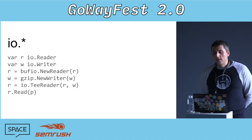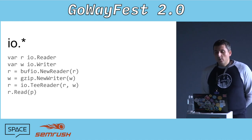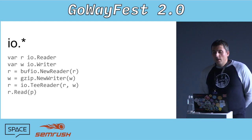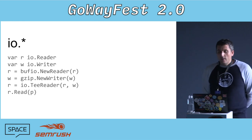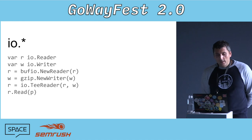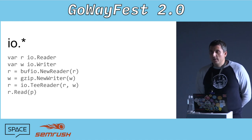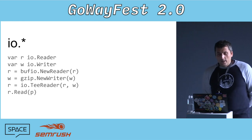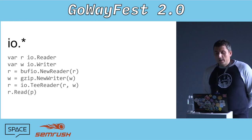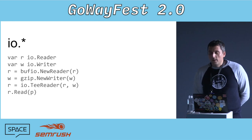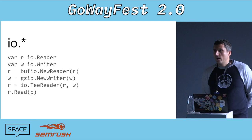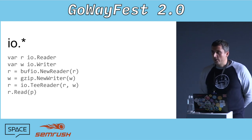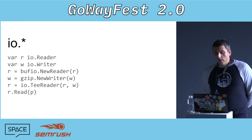On this slide we can see two variables: variable R, which is an IO reader, and variable W, which is an IO writer. bufio.NewReader is simply a decorator — it takes an interface and returns an implementation of the same interface, but instrumented with buffering. We can also see zip.NewWriter, which is also a decorator: it takes a writer interface and returns a writer interface instrumented with compression. The same applies with IoTee reader.